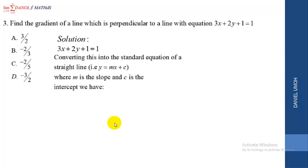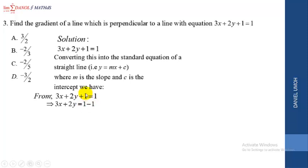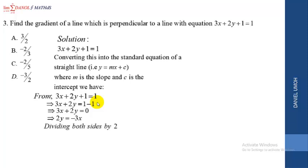The standard equation of a straight line is y equals mx plus c, where m is the slope and c is the y-intercept. Converting: 3x plus 2y plus 1 equals 1 implies 3x plus 2y equals 1 minus 1, which is 0. Making y the subject: we take 3x across, giving 2y equals minus 3x. Dividing both sides by 2, we get y equals minus 3 over 2 times x.